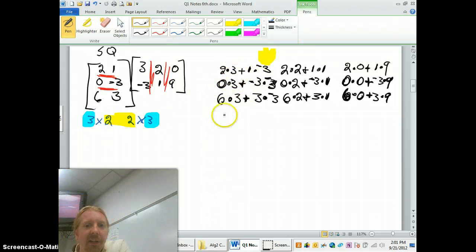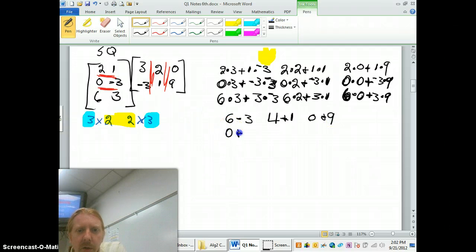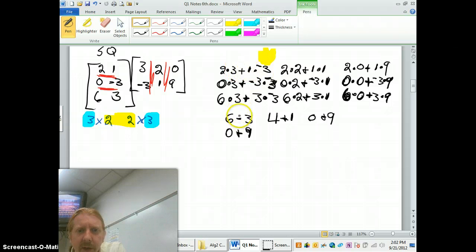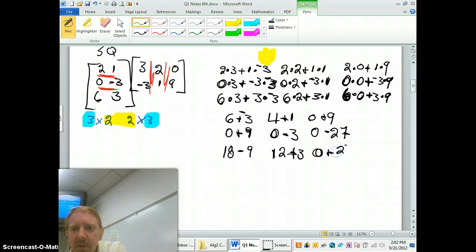Now comes the last bit of arithmetic, which is cleaning up my mess. 6 times 0 plus 3 times 9. So 6 minus 3, 4 plus 1, 0 plus 9, 0 plus positive 9. What happened here? Did I lose a negative? 6 plus negative 3. 7 plus 3, 0 minus 3, 0 minus 27, 18 minus 9, 12 plus 3, and finally 0 plus 27.